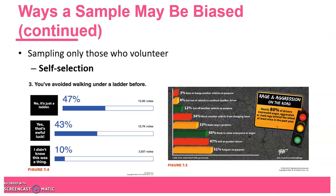Self-selection means sampling only those who volunteer. Here are a couple of examples of online polls — one in which people self-selected to respond on BuzzFeed. It is also possible to conduct an online study that's less biased, in which people are randomly selected online.